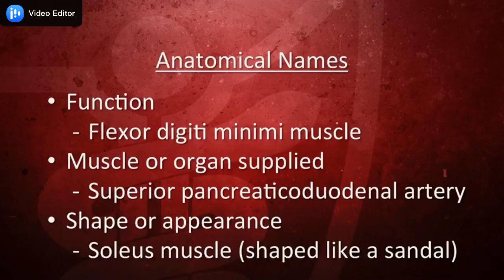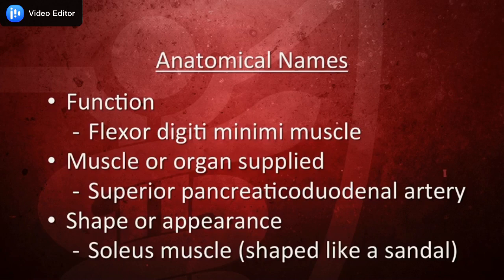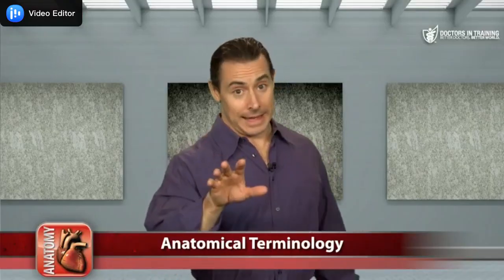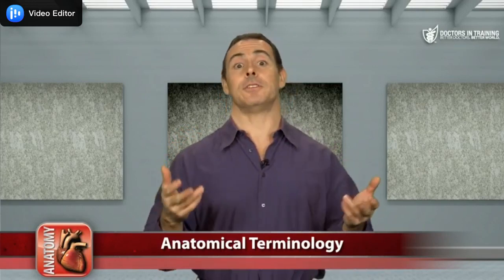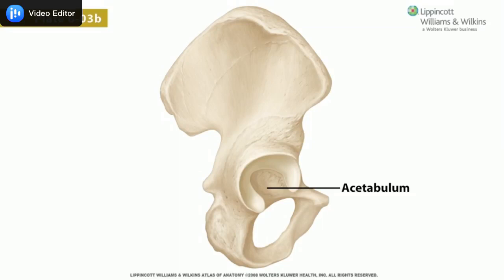Anatomical structures may be named according to their function — for instance, the flexor digiti minimi muscle of the hand, which flexes the smallest finger — or according to the muscle or organ they supply, like the superior pancreaticoduodenal artery, which supplies the pancreas and the duodenum, or according to their shape or appearance. The resemblance may be obvious, such as the soleus muscle, which is shaped like the bottom of a sandal and is named for the Latin word for sandal. But the resemblance often requires some imagination, such as in the case of the socket for the hip joint, which someone named the acetabulum after its alleged resemblance to a vinegar bowl.